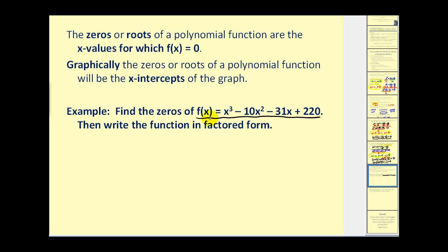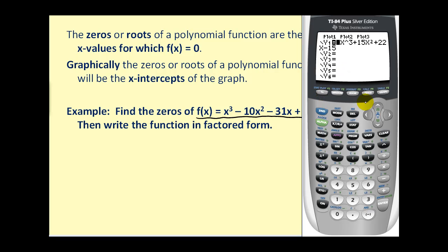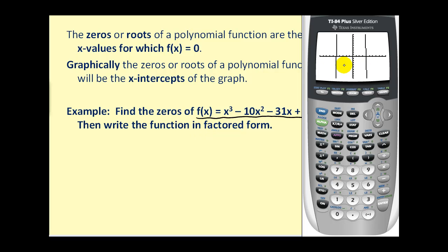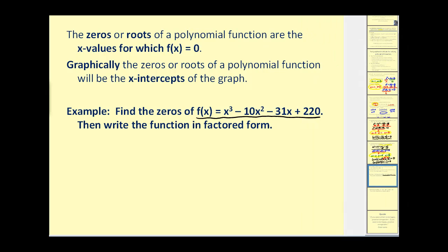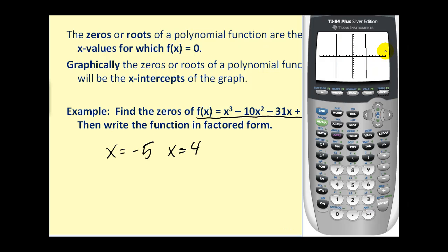Let's graph one more function and find its x-intercepts. Press graph. Since it's degree three, we expect three x-intercepts, but unfortunately we only see two. We can identify an x-intercept at negative five and positive four. One of the x-intercepts must be off the screen.